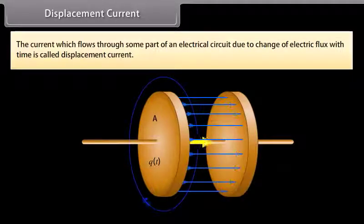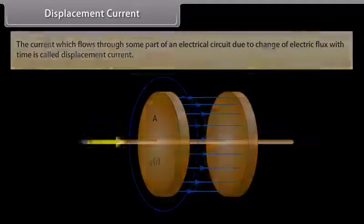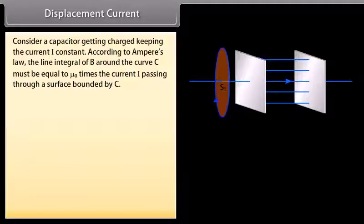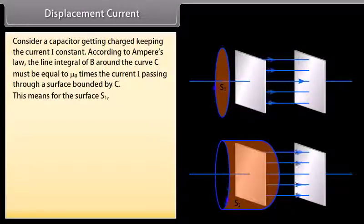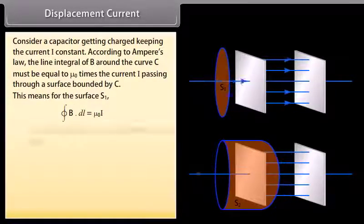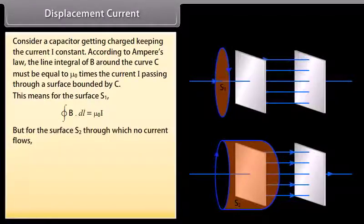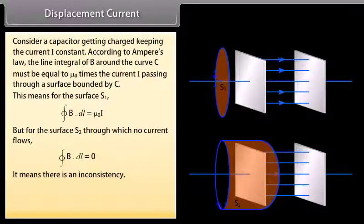Displacement current. The current which flows through some part of an electrical circuit due to change of electrical flux with time is called displacement current. Consider a capacitor getting charged keeping the current I constant. According to Ampere's law, the line integral of B around the curve C must be equal to mu not times the current I passing through a surface bounded by C. This means for the surface S1, closed integral of B dot DL is equal to mu not I. But for the surface S2 through which no current flows, closed integral of B dot DL is equal to 0. It means there is an inconsistency.